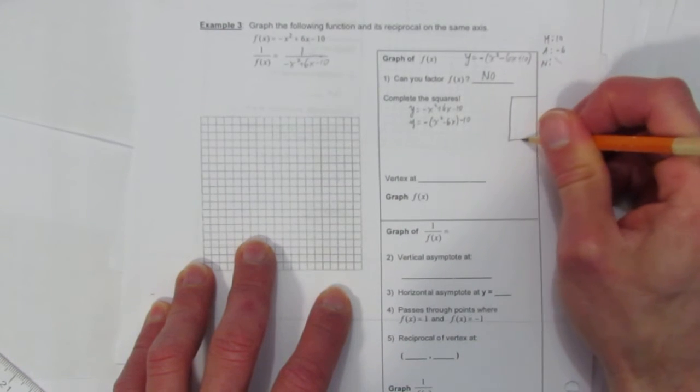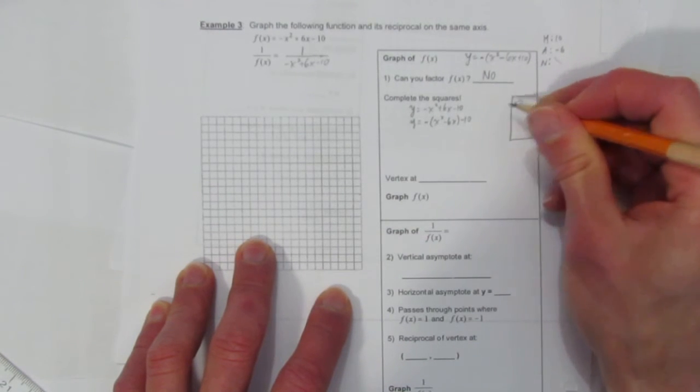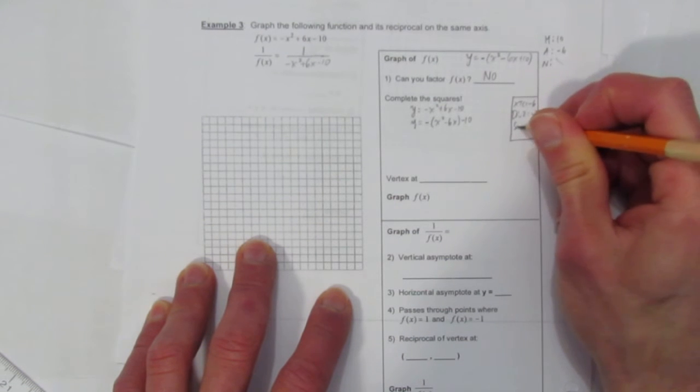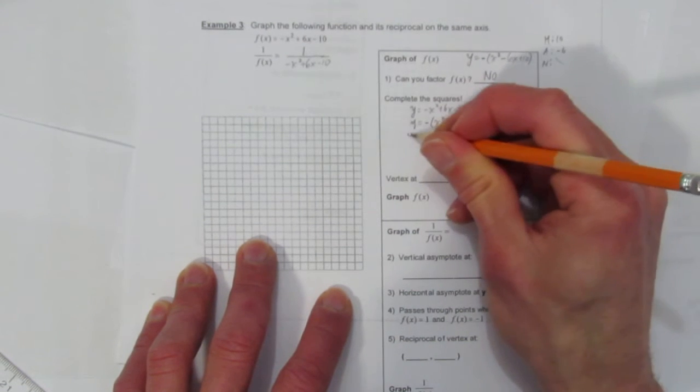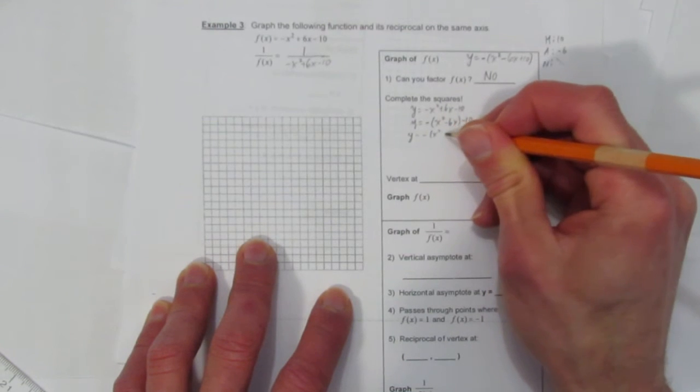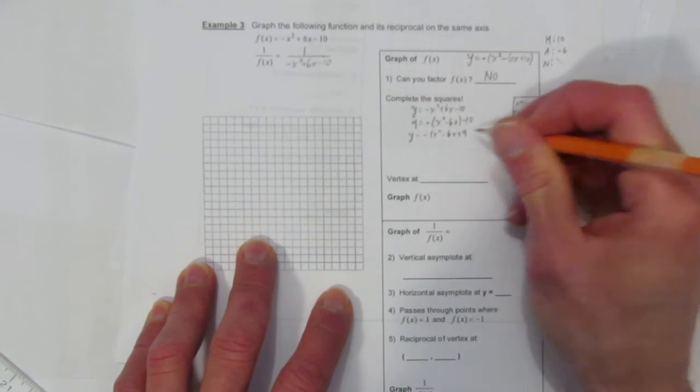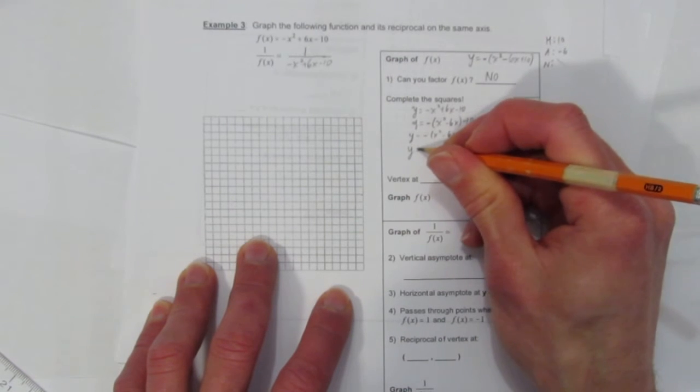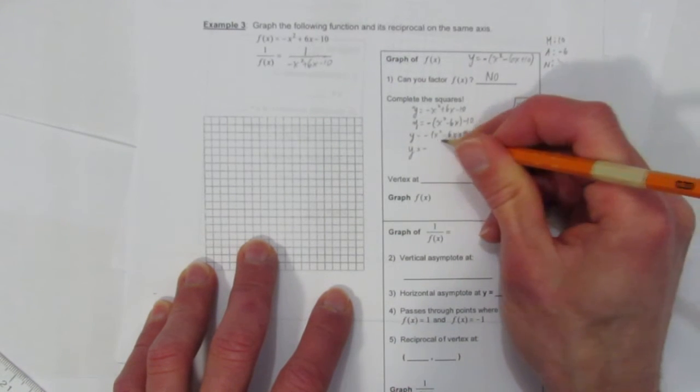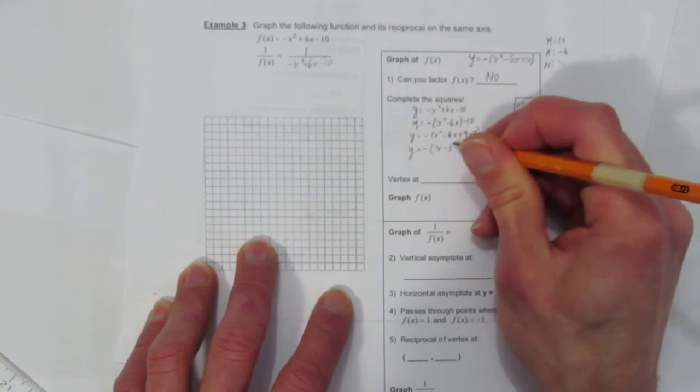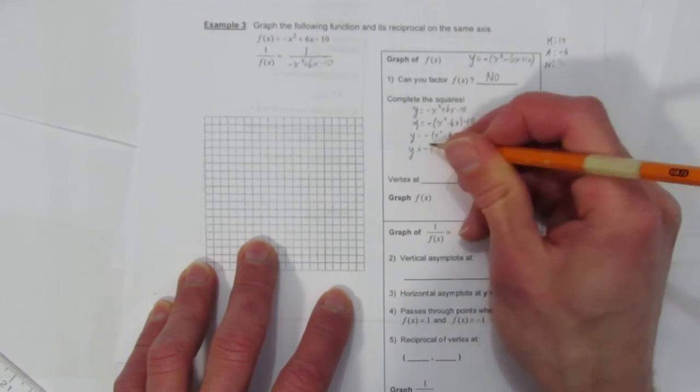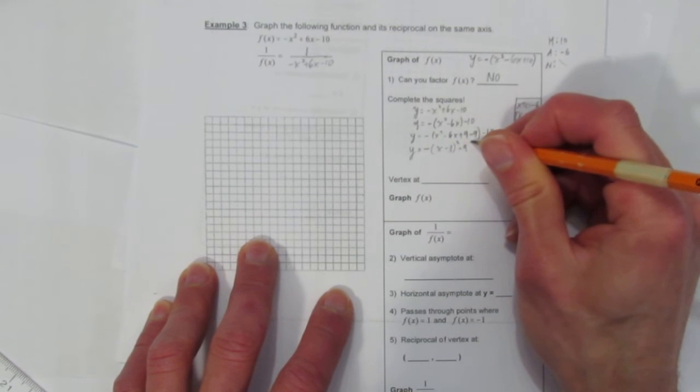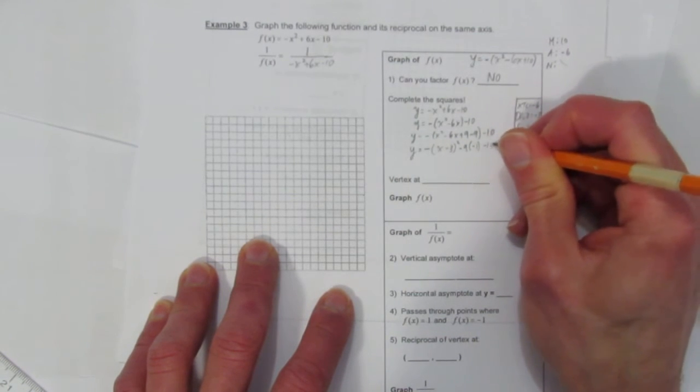If you watch the Complete the Square video, you'll know we look at the x term coefficient, which is negative 6, divide it by 2, you get negative 3, and square it, you get 9. So we add that square on, x squared minus 6x plus 9, and then take it away to keep the equation the same. And now, to complete the square, we look at those first three terms, and that makes a perfect square of x minus 3 squared. But we have to pull this minus 9 out of the brackets, which means it gets times by this a value.